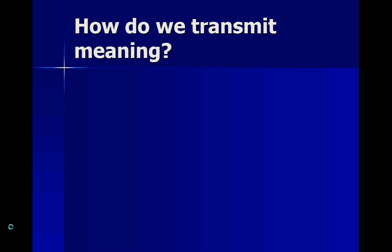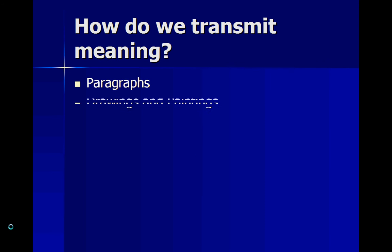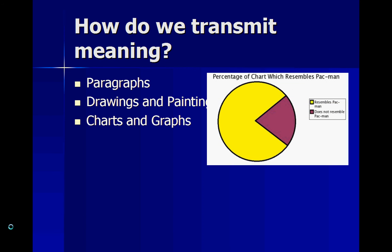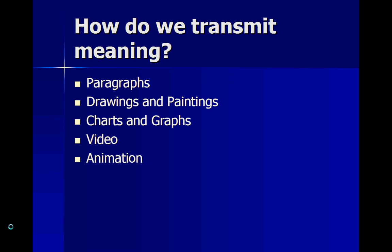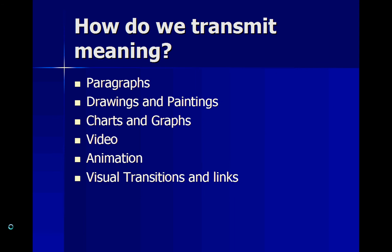The author talks about how we transmit meaning. We have paragraphs, drawings and paintings, charts and graphs, video and animation — noting that video doesn't necessarily mean animated video, it could be a news clip or a short clip of someone walking. We also have visual transitions, hyperlinks in HTML and web page documents, and sounds like the speaker's own voice. Which of those forms do you think are most useful and why? And if you had to choose only one to transmit meaning, which would you use?